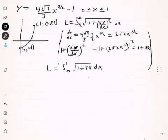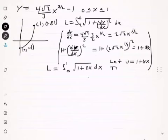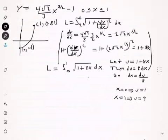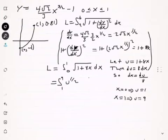To solve that we're going to use substitution. We let u equals 1 plus 8x, then du equals 8 dx, so dx equals du divided by 8. We also change the limits: x equals 0 implies u equals 1, and x equals 1 implies u equals 9. So we get a new integral from 1 to 9, with u to the 1/2 power and dx replaced by du divided by 8.